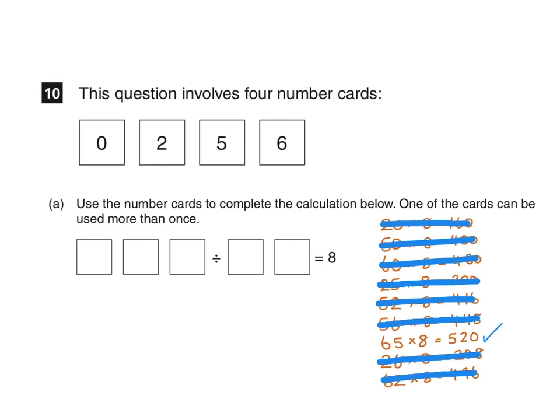Here then the only answer which we can give is 65 multiplied by 8 is 520. This means that by using the 5, the 2, and the 0 to make 520, I can then divide that by 65 here by using the 5 twice, and this would result in the answer of 8. The calculation we should have given here then is 520 divided by 65.